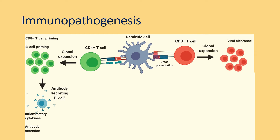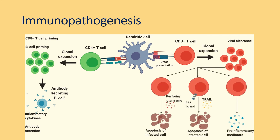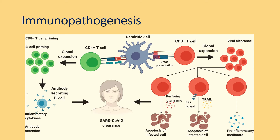The CD8 cells, on the other hand, are responsible for viral clearance either through the perforin-granzyme pathway or the fas ligand pathway. They cause apoptosis of the infected cell and thereby mitigate viral infection. Both these pathways are important in SARS-CoV-2 viral clearance.